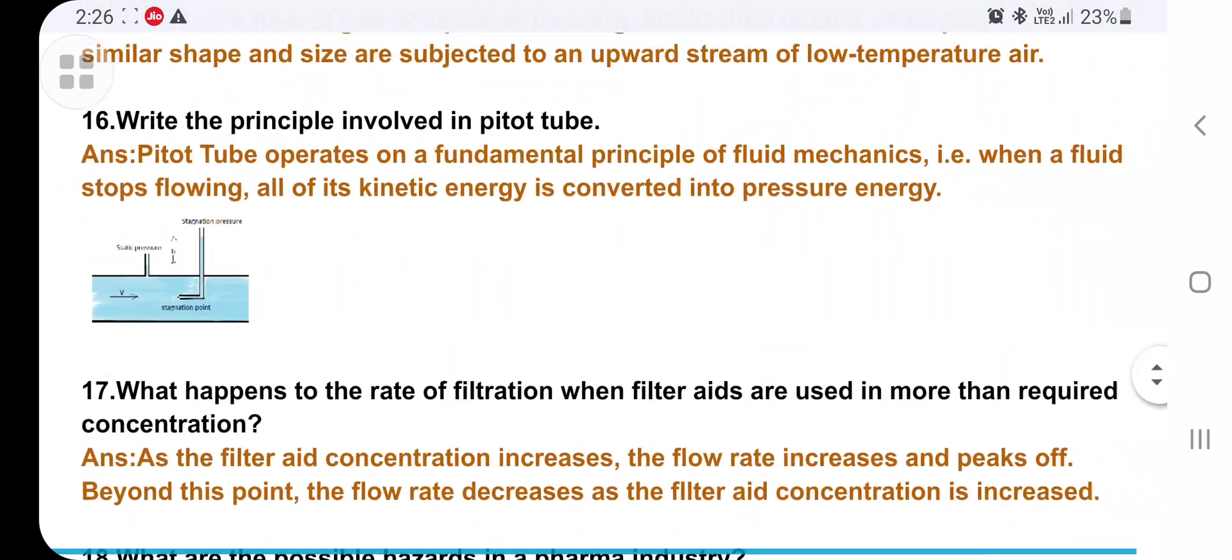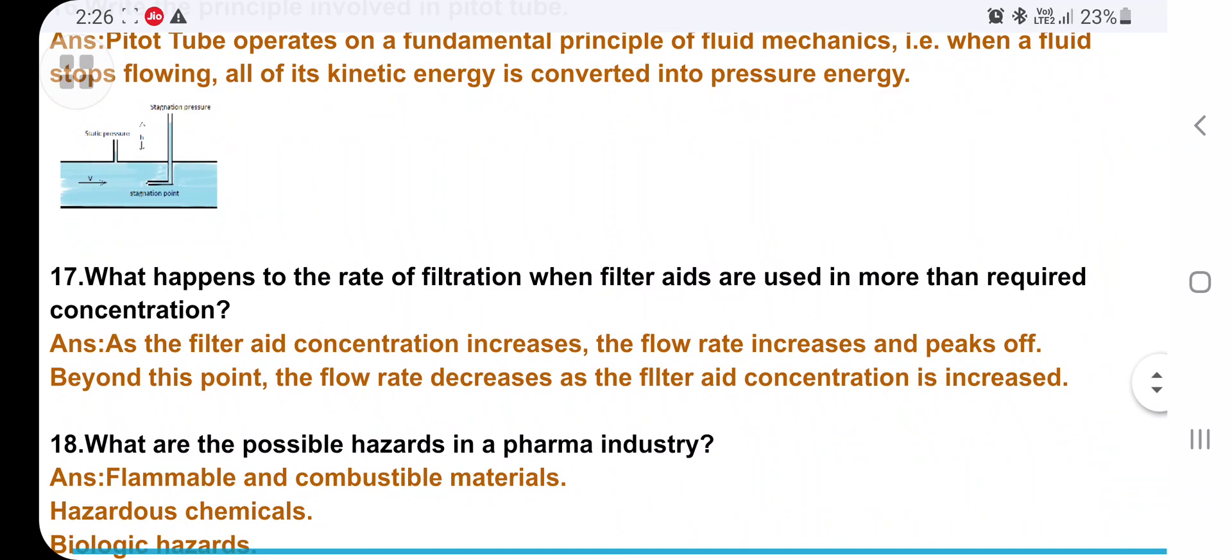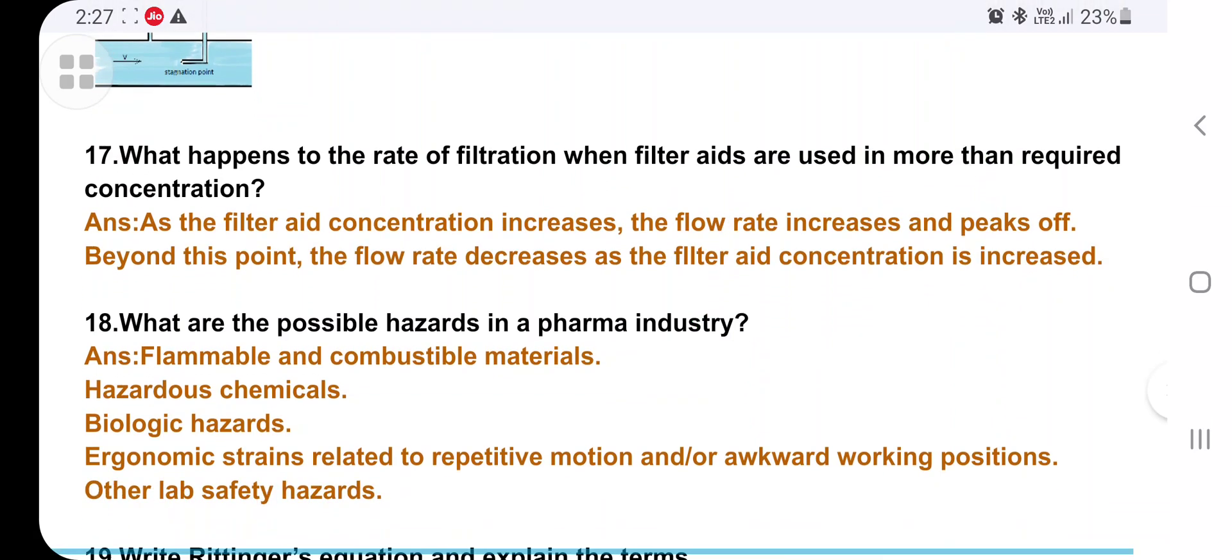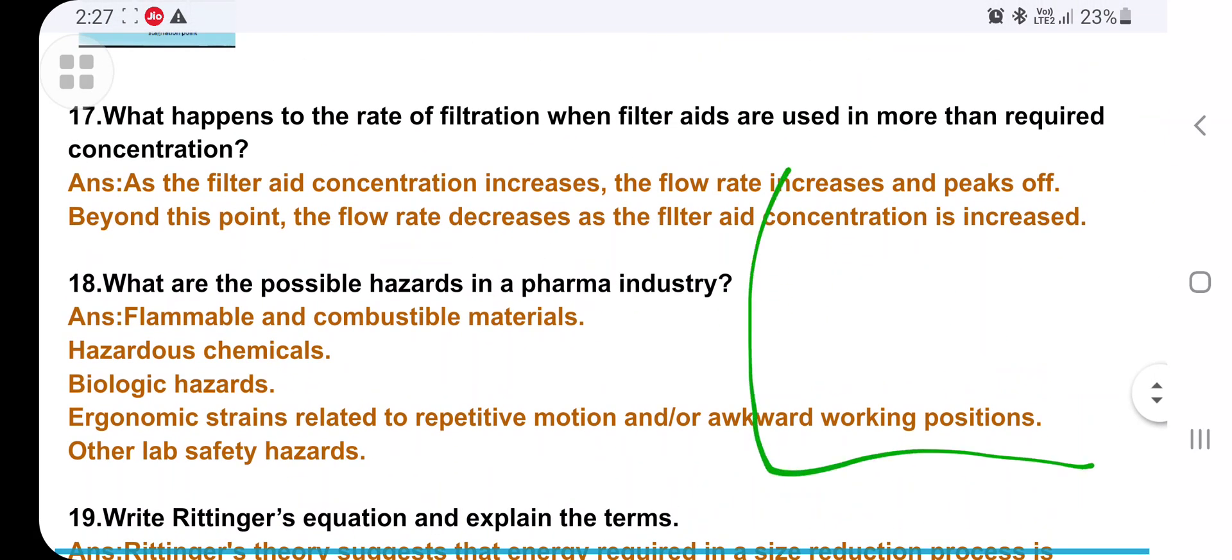What happens to rate of filtration when filter aids are used in more than required concentration? As the filter aid concentration increases, the rate of flow increases and peaks off until it reaches the peak level. If you increase the concentration further, the rate of filtration decreases. You can give a peak diagram for this.